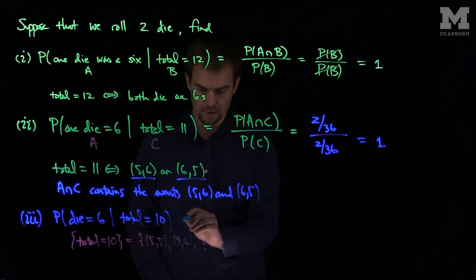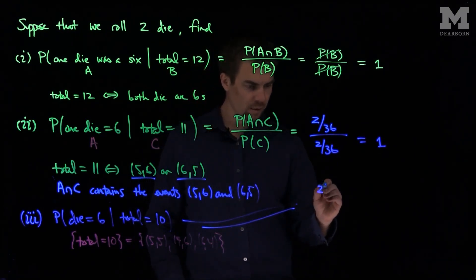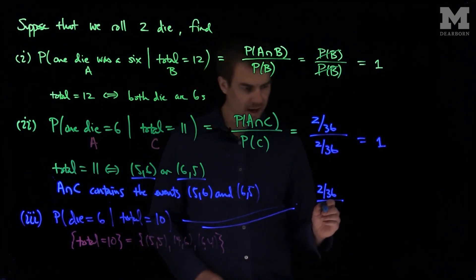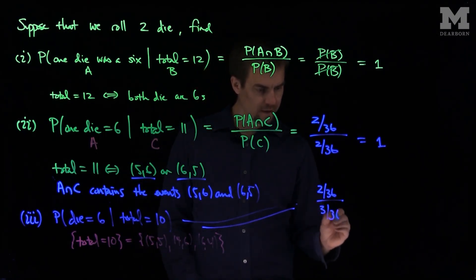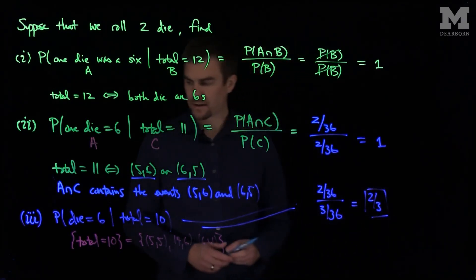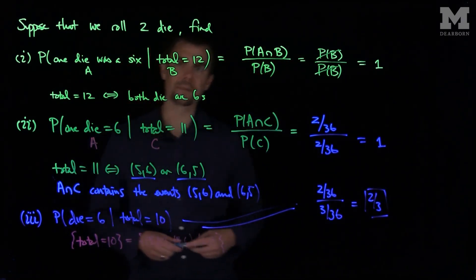So this probability over here will be 2 out of 36 over the probability of getting a 10, which is a total of 3 out of 36. So we get a total of 2 thirds probability that one of the dice is a 6, given that the total is 10.